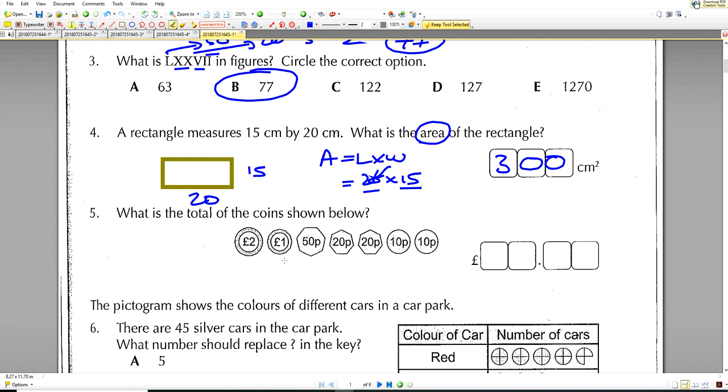Question number 5. Right, you've got to add up all these coins and that should give you a total of £4.10.